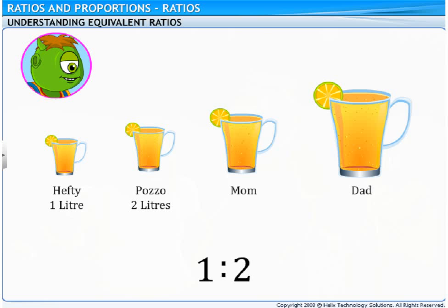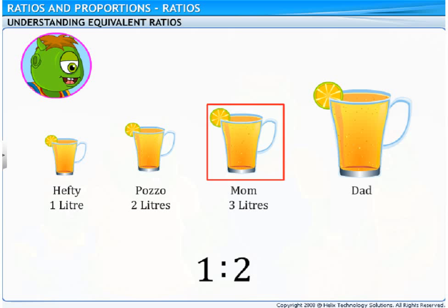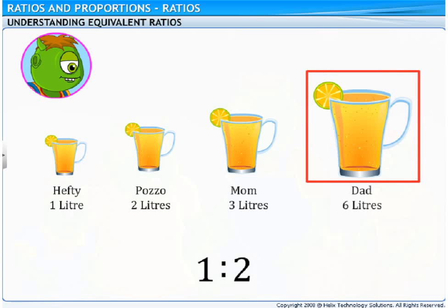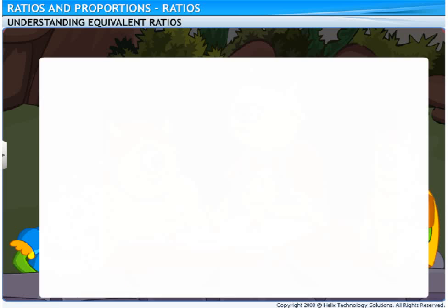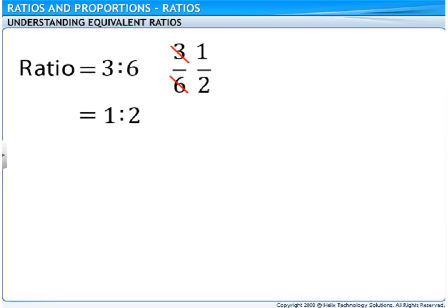You're right, Hefty. Your mom is having 3 litres of lemonade while I'm having 6 litres. Let me show you something interesting now. The ratio of your mom's lemonade to my lemonade is also 1 is to 2. Wow! Dad, that's two ratios that look equal.